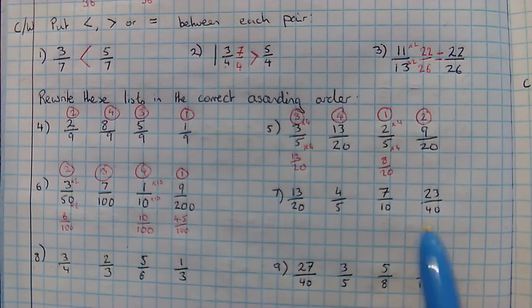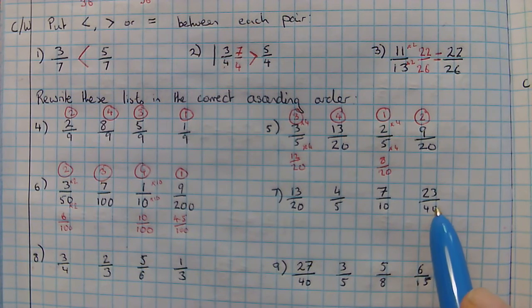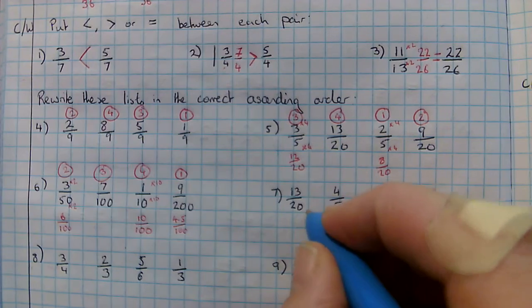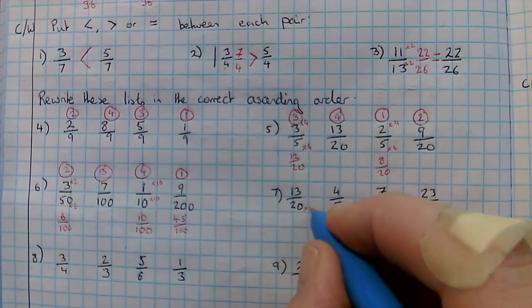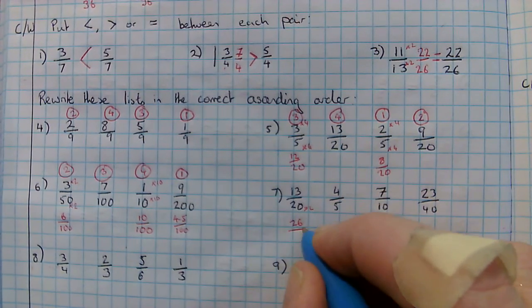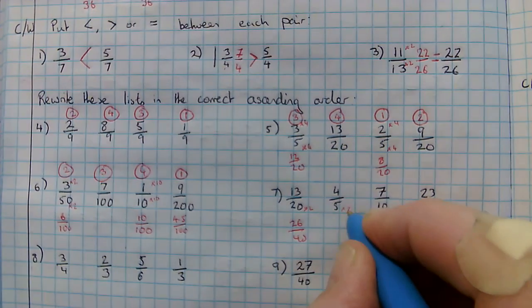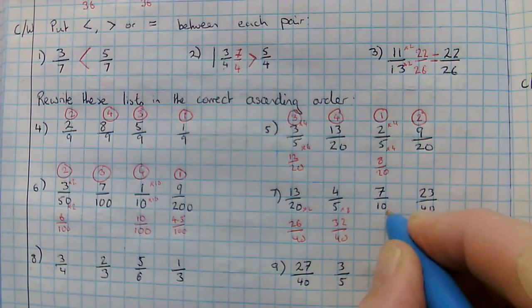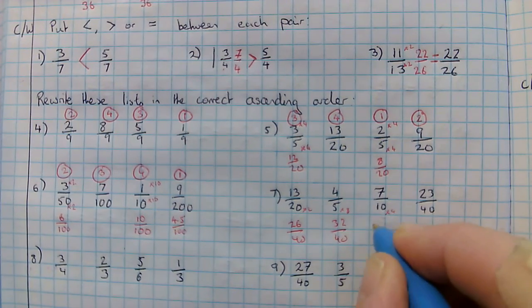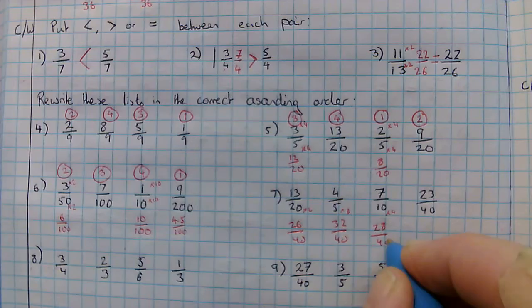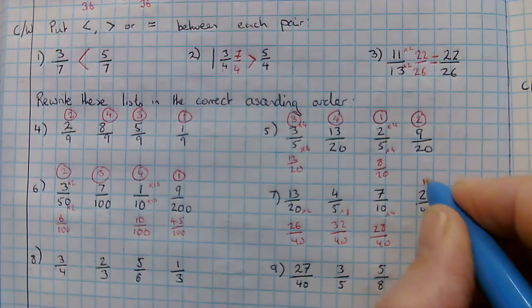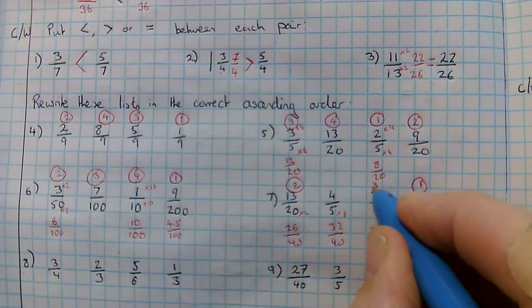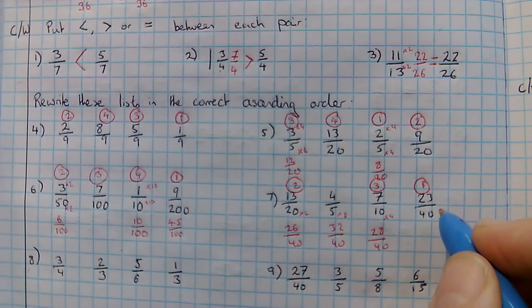For the next one, forty is the largest denominator. Ten goes into forty, five goes into forty, twenty goes into forty, so we're going to put everything out of forty, which would give me twenty-six out of forty. Times this by eight to give me thirty-two out of forty. Times this by four to give me twenty-eight out of forty, and I've got twenty-three out of forty. So twenty-three is going to be the smallest, followed by twenty-six, followed by twenty-eight, followed by thirty-two.